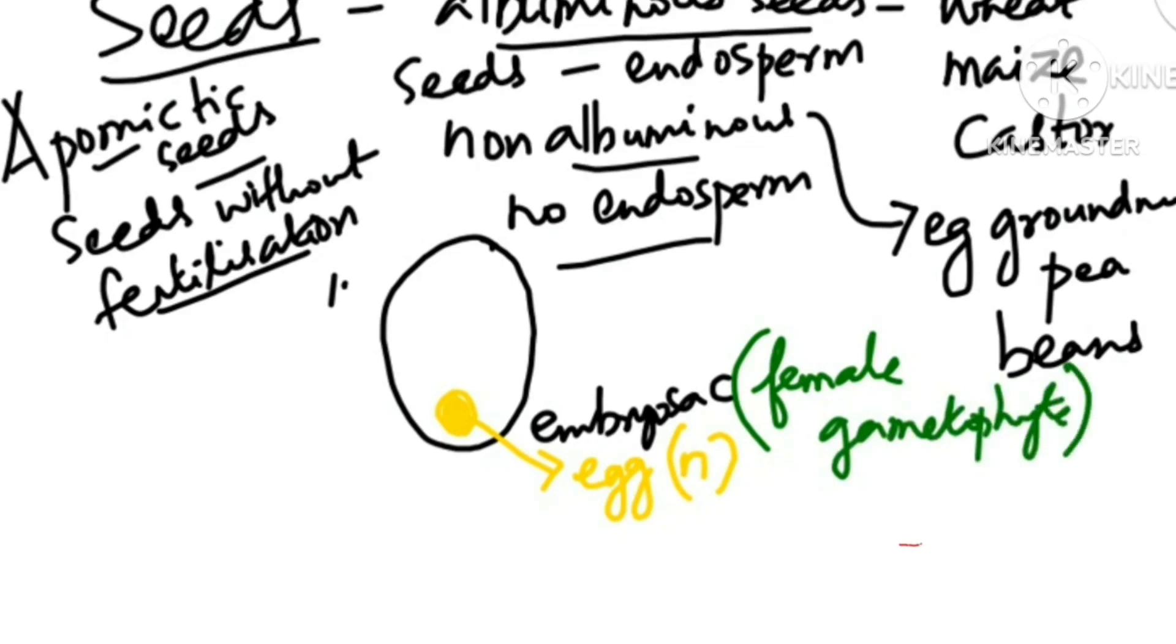Coming to this egg, usually eggs are haploid, and when the male gamete comes and fuses with it, it will result in a diploid zygote which is called syngamy.